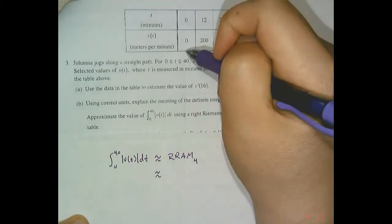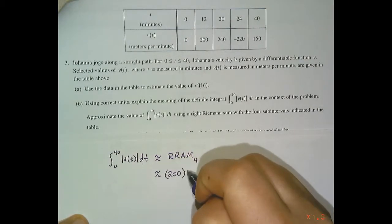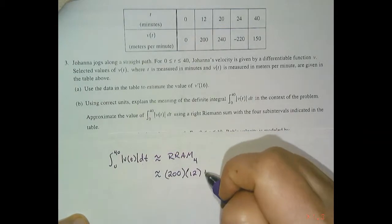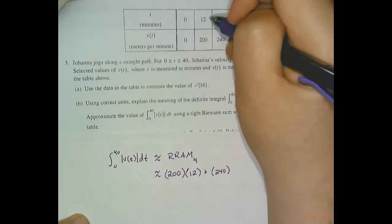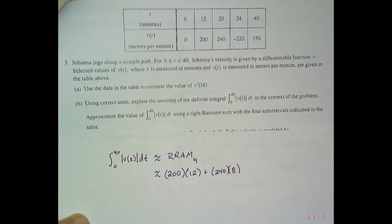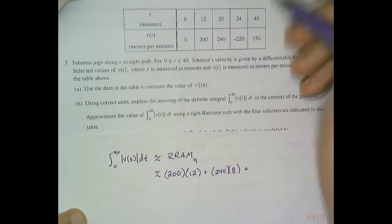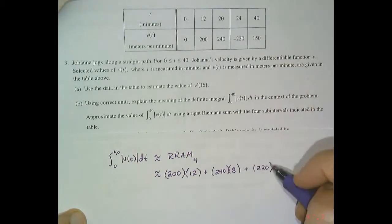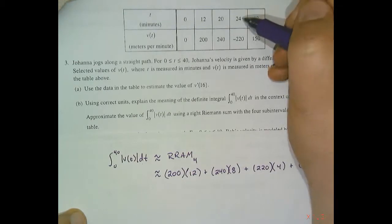Our first rectangle has a height of 200 meters and a width of 12 minutes. Our second rectangle, when we do the right hand side, is a height of 240 and a width of eight units. Our third rectangle has a height of positive 220 because we're doing absolute value of velocity. So positive 220 with a width of four, and our last rectangle has a height of 150 with a width of 16.